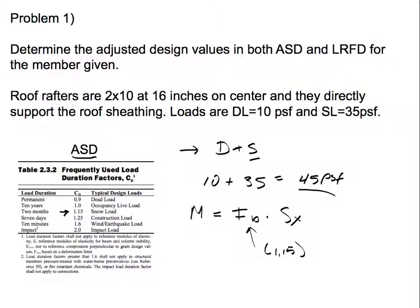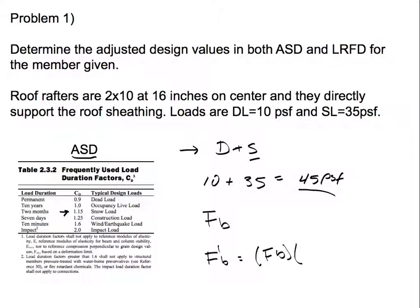So I'm going to use the load duration factor of 1.15 for snow load. When I have my bending stress, I take FB times my load duration factor, which is going to be 1.15. So now my bending stress is adjusted due to the load duration factor. This is for ASD.